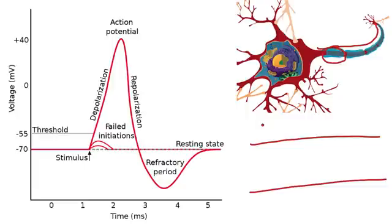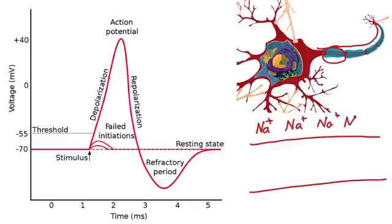Now if you remember from a previous episode, outside the axon we have a lot of sodium ions. So I'm going to draw sodium ions here and they are all outside the cell.